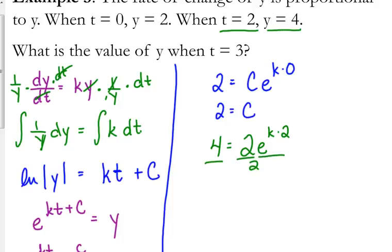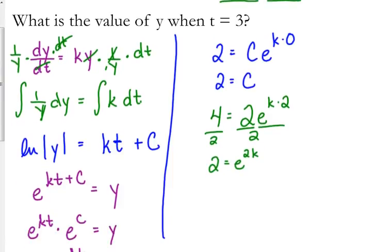So if we solve this, divide by 2, 2 is equal to e to the 2k. Well, we want to know what k is. So how do we solve for k here? Natural log. Natural log of 2 is equal to 2k.